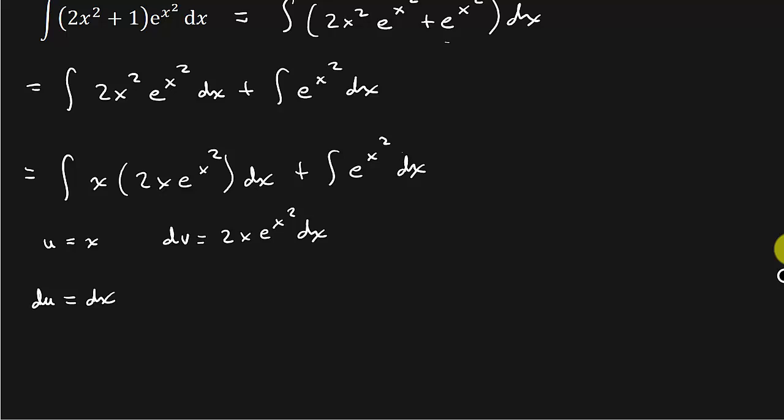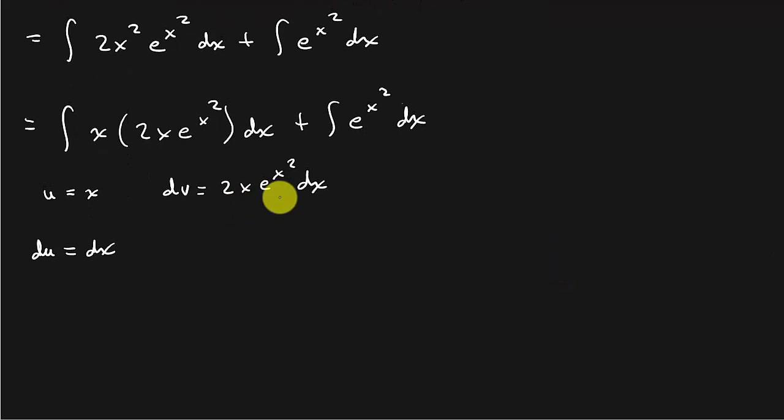And now what I have to do is I have to integrate this part. So let's just, let's come over to the side and do that. So if I integrate 2x e to the x squared dx, you know, you can use a u substitution here. u equals x squared, the exponent. Let u equal the exponent.